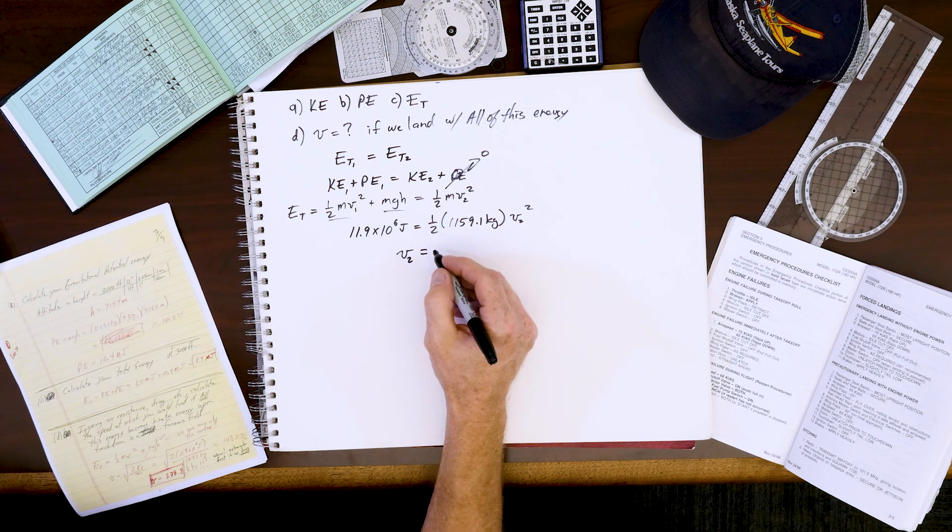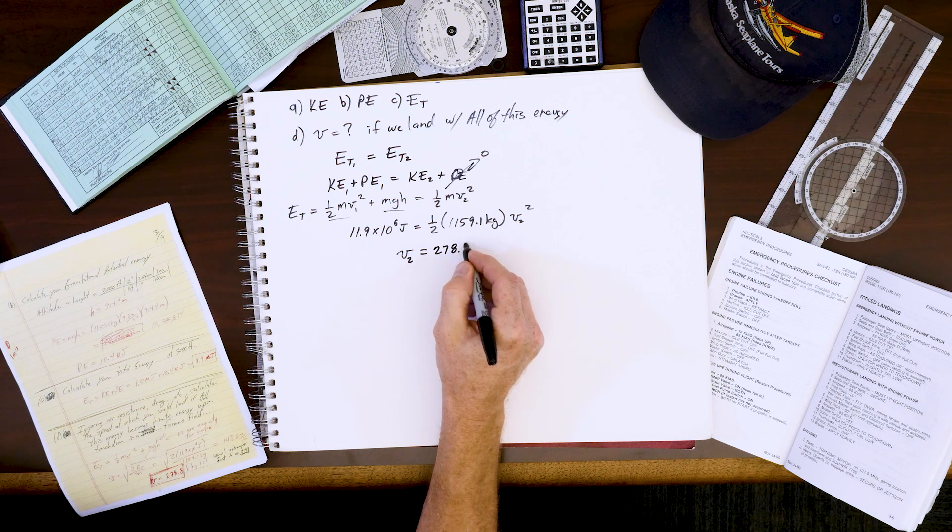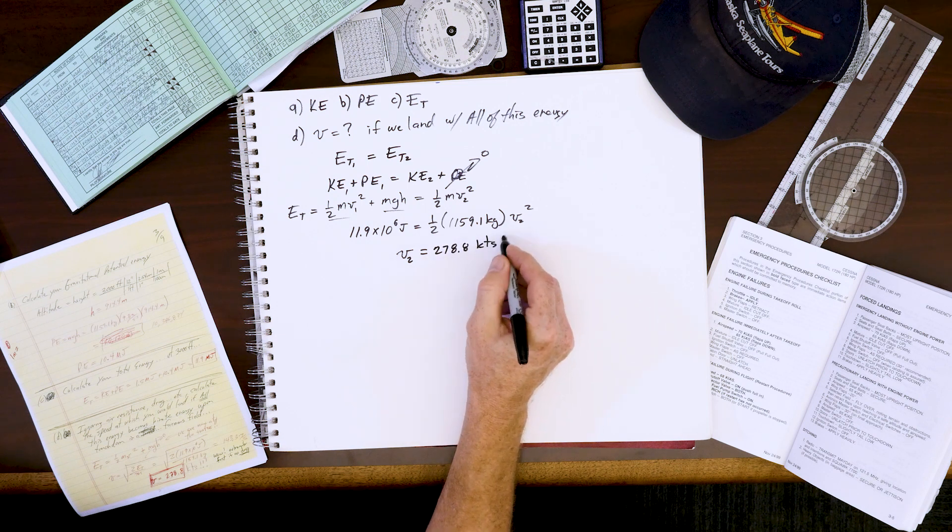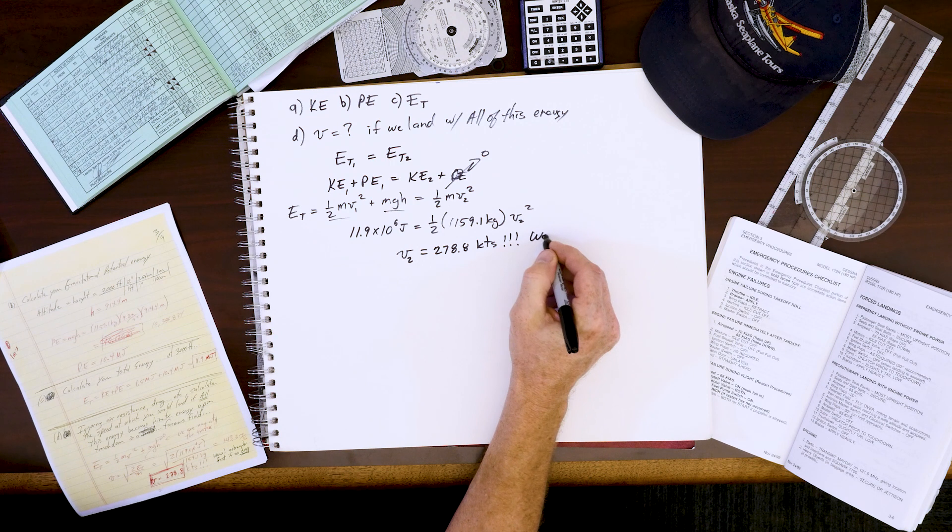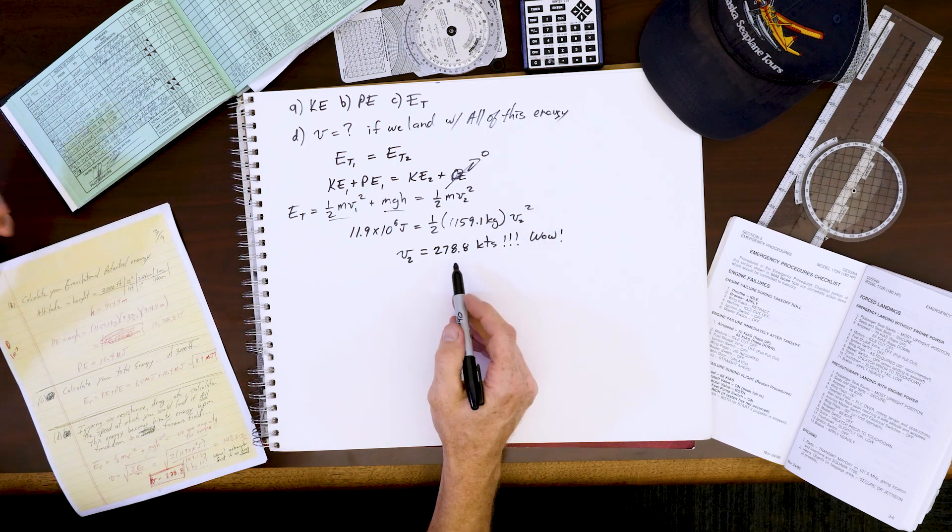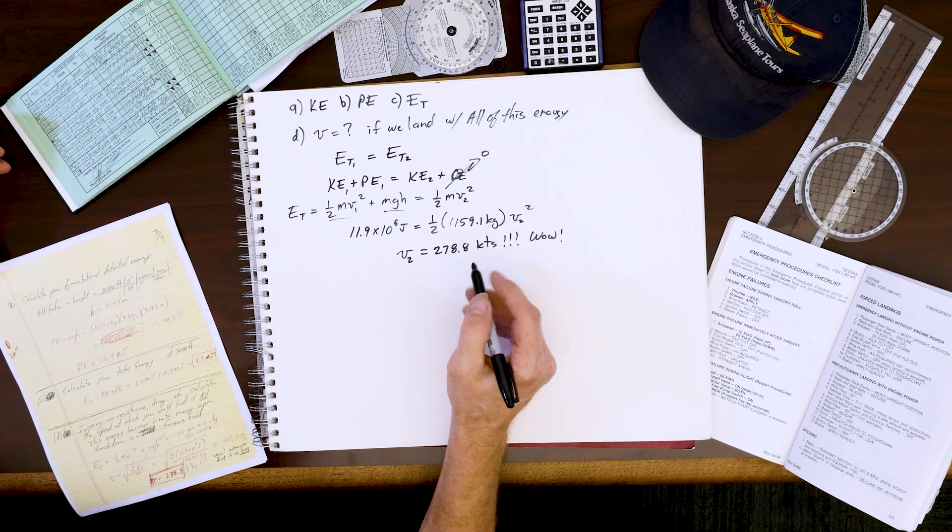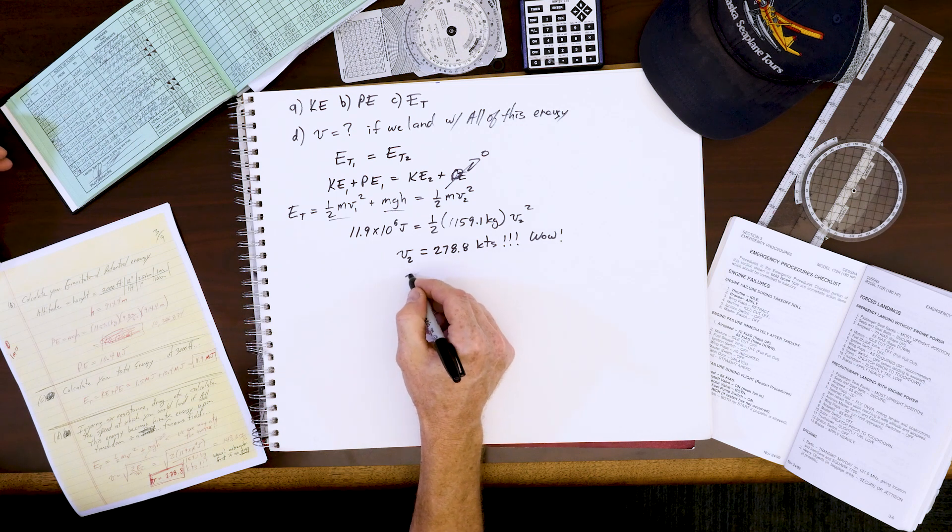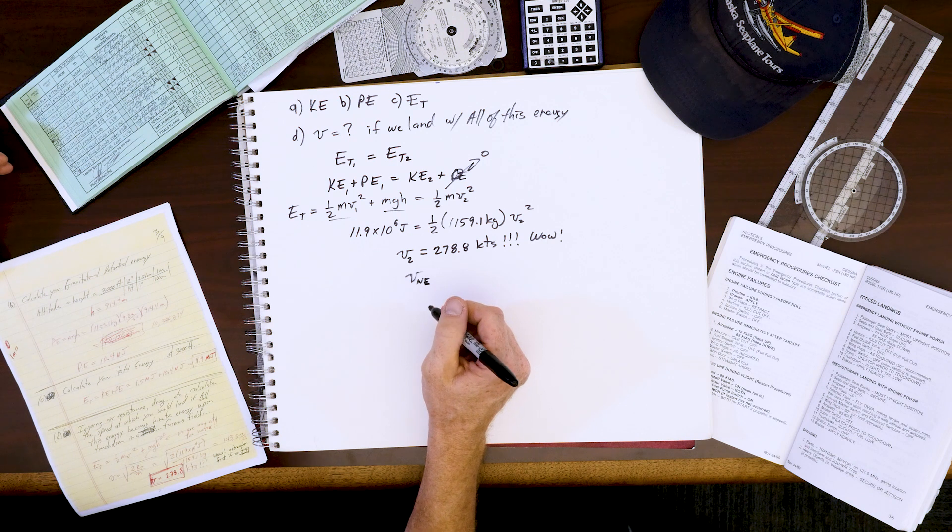Equals 278.8 knots. Wow! What does this tell us? This is clearly way out of the realm of possibility. This is way over our V_NE. You all know that V_NE means the V never exceeds speed; you'd have structural failure on your Cessna.